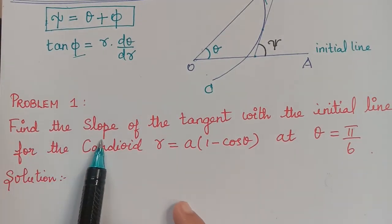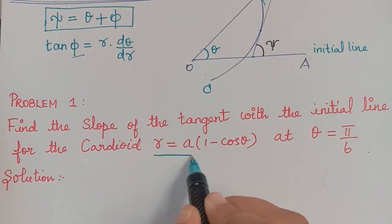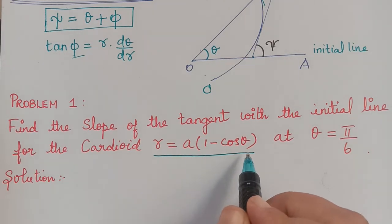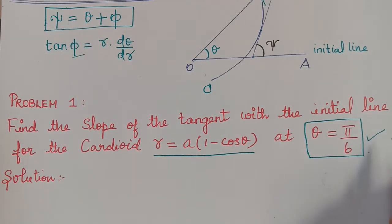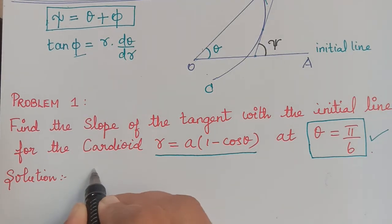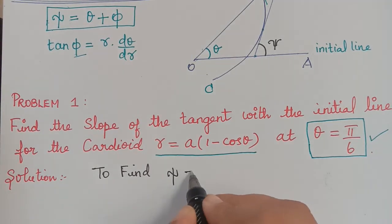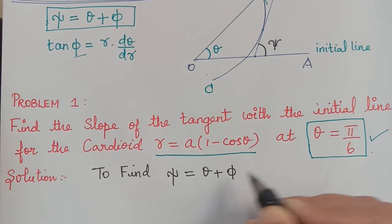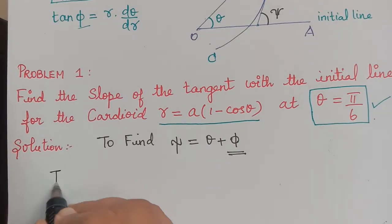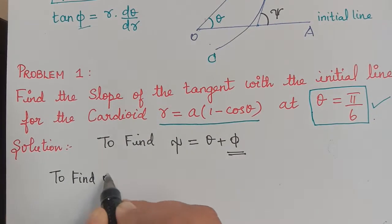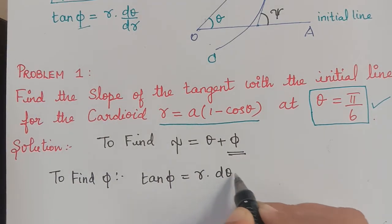The question asks us to find the slope of the tangent with the initial line for the cardioid r = a(1 − cos θ) at the point θ = π/6. Our first step will be to find phi using the formula tan φ = r · dθ/dr, and then substitute to get xi = θ + φ.